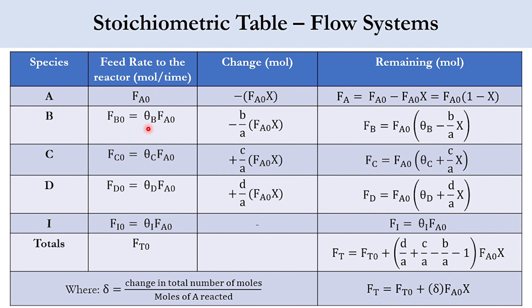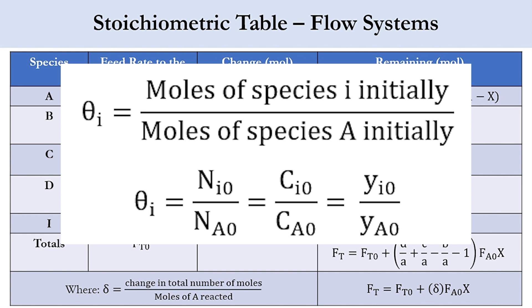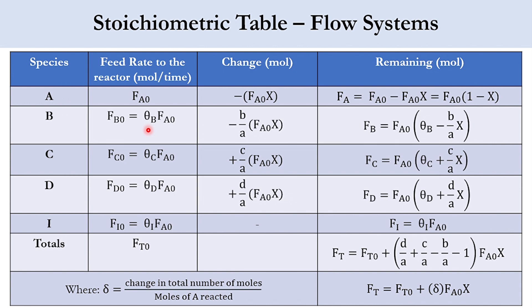From our previous lecture we defined theta_I as the initial moles of species I divided by initial moles of limiting reactant, Ni0 over Na0. In the same way for flow systems, theta_I equals FI0 over FA0, and theta_B equals FB0 over FA0. So FB0 equals theta_B times FA0, FC0 equals theta_C times FA0, FD0 equals theta_D times FA0, and FI0 equals theta_I times FA0. The sum of all these gives FT0, the total molar flow rate at the inlet.